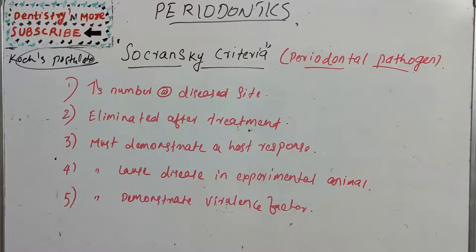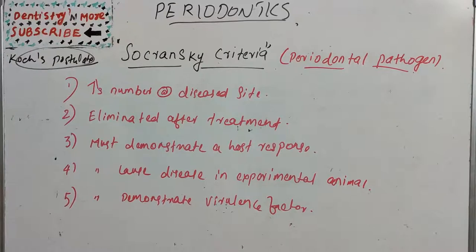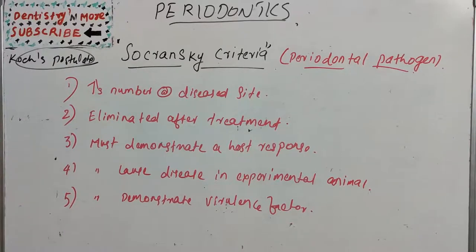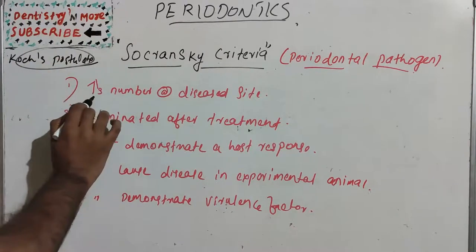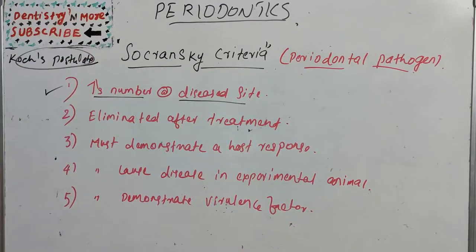The first criterion is that the group of bacteria or microorganisms must be associated with the disease, and there should be an increase in the number of organisms at diseased sites. For example, if a particular tooth has localized periodontitis, there should be more of that particular microorganism — such as Porphyromonas gingivalis or Actinomycetum comitans — compared to healthy sites.